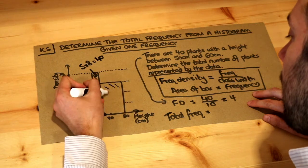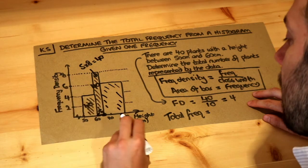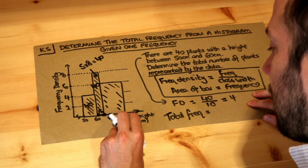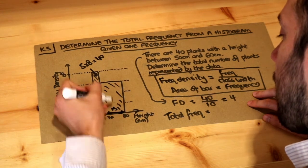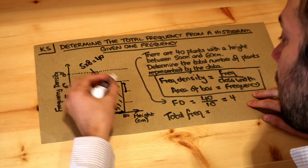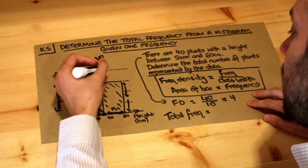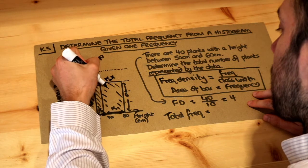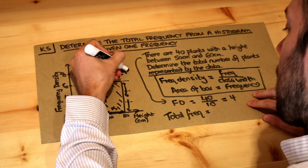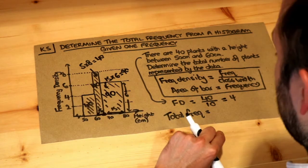And then this last bar here, that's a width of 15, because look, we've got 65 to 80, that's a width of 15. And what's the height? The height is 6, so we just do 15 times 6, which is 90. So this bar therefore represents 90 plants.